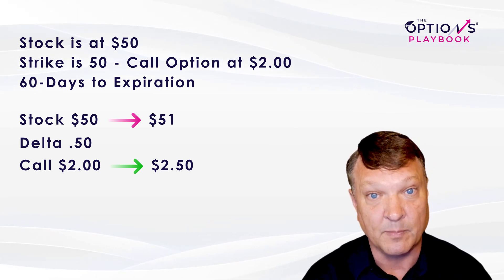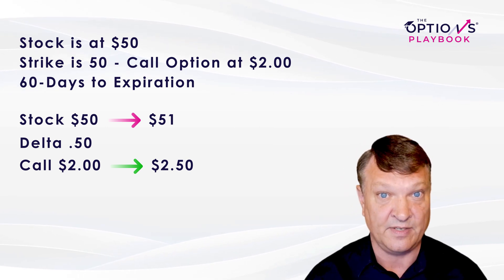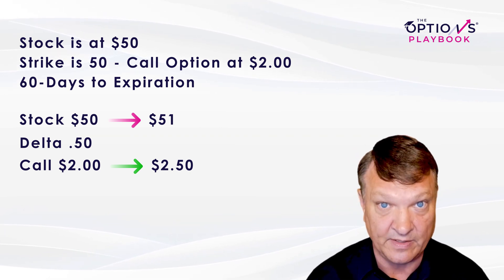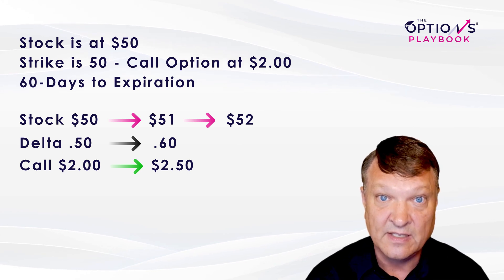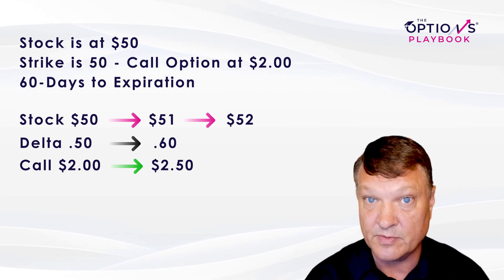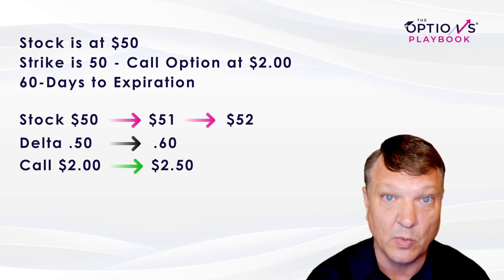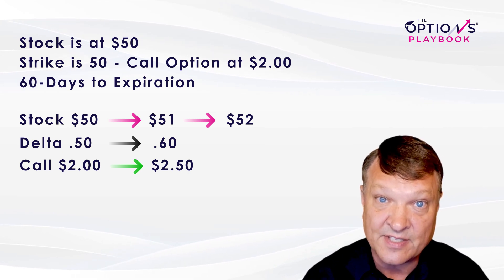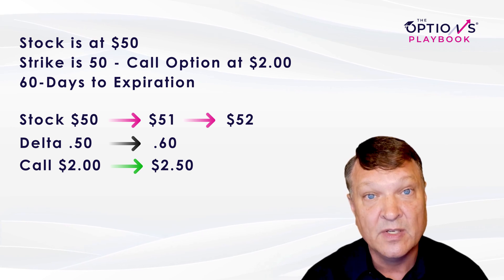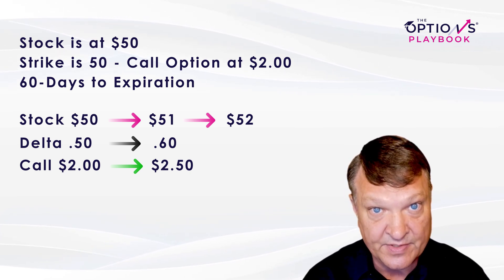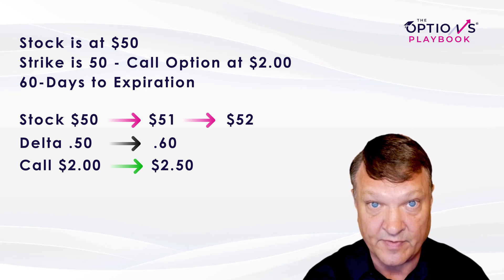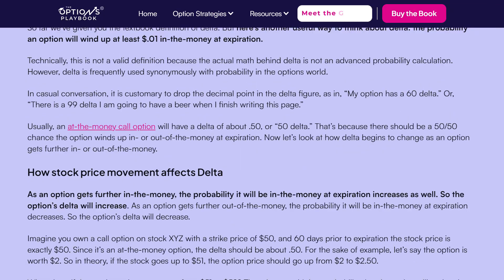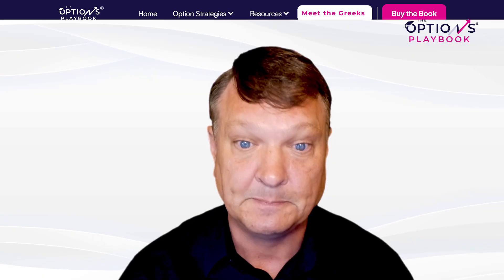Now, on the next one-point movement, is Delta still 50? No — it's actually 60. The stock goes from 50 to 51 and Delta was around 50; it's dynamic in the real world. Then the stock goes from 51 to 52 and Delta is now 60 cents. So the option went from $2.00, up to $2.50, and then up another 60 cents to $3.10. That example is inside the 'Meet the Greeks' section of optionsplaybook.com.